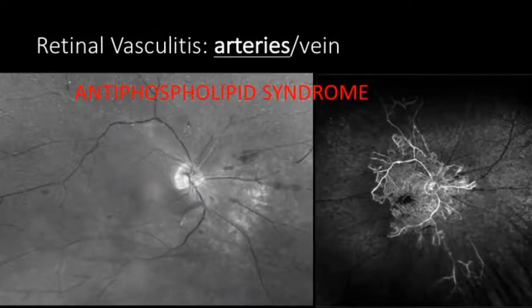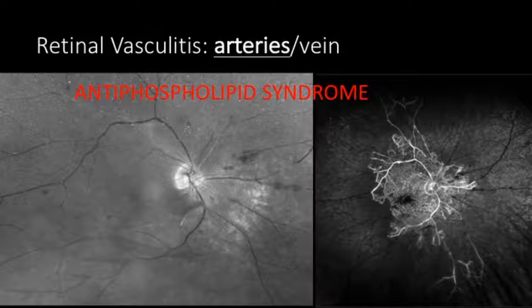The second etiology associated with arterial involvement of vasculitis is autoimmune diseases. This is a red-free image of a patient who presented with vitreous cells, and you can see there is a very selective arterial involvement. The fluorescent angiography revealed marked hypoperfusion of the macula and the retinal periphery, and the patient turned out to have antiphospholipid syndrome.